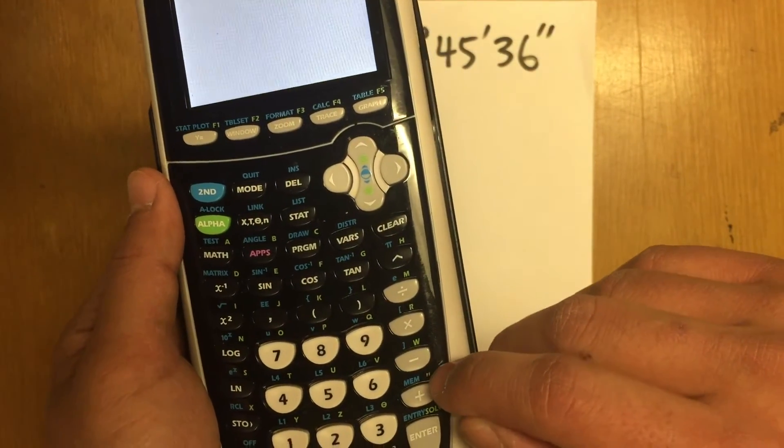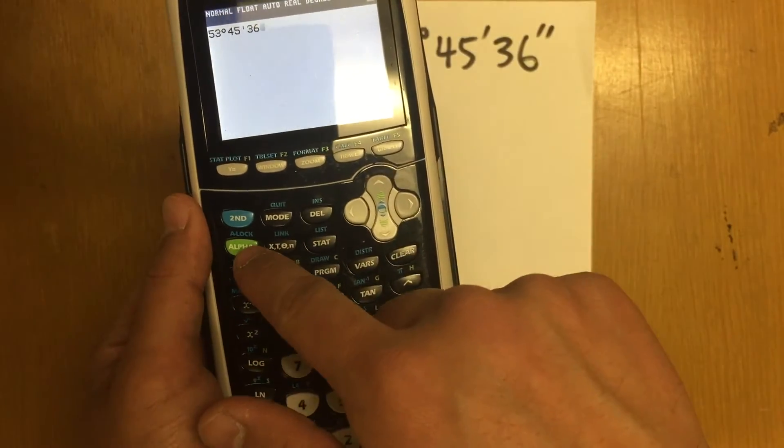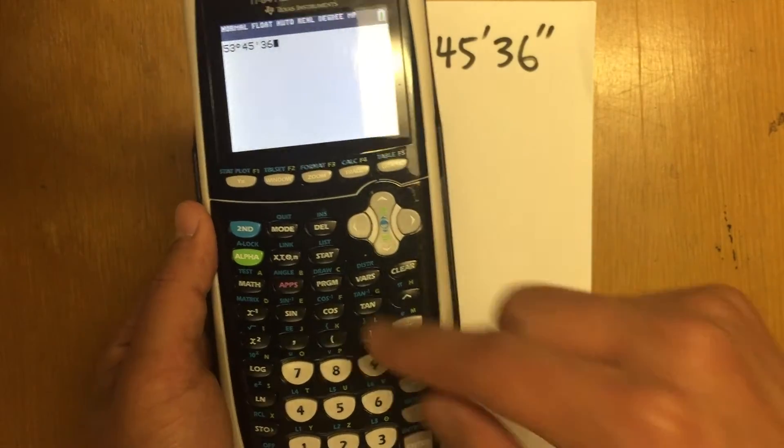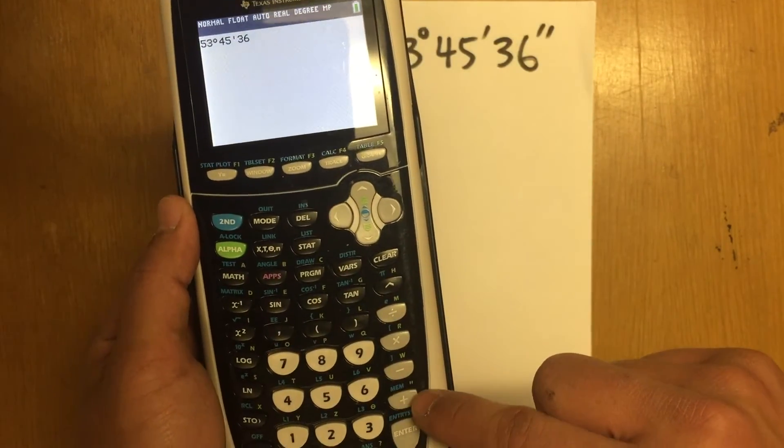And it's in green. This indicates that I have to hit alpha first and then the plus key to get to the seconds. So alpha and this key.